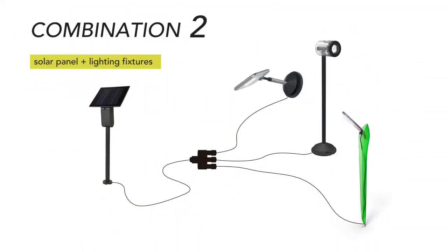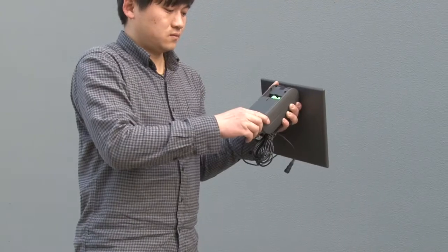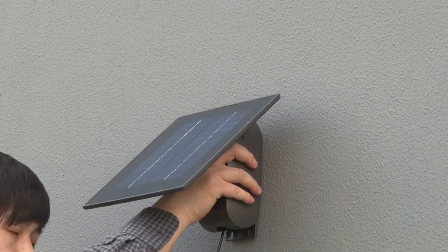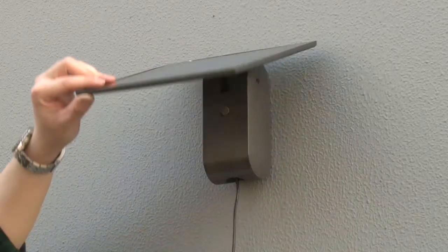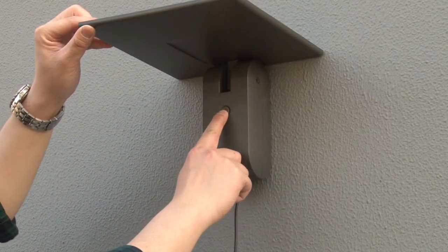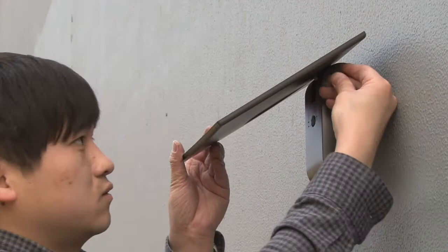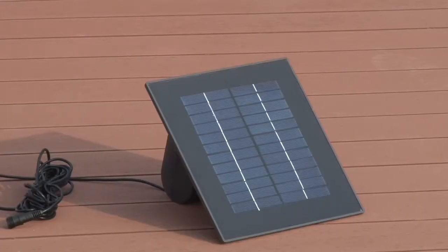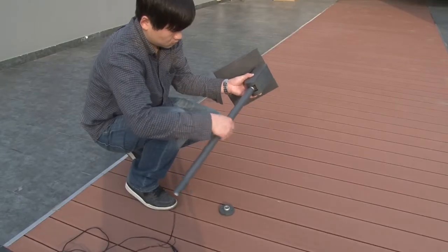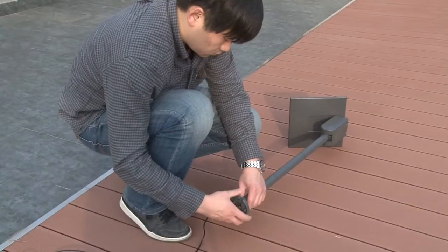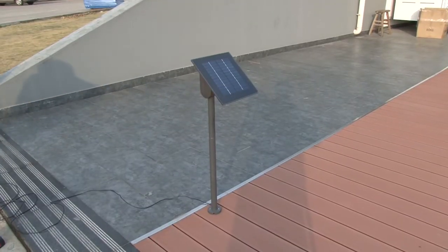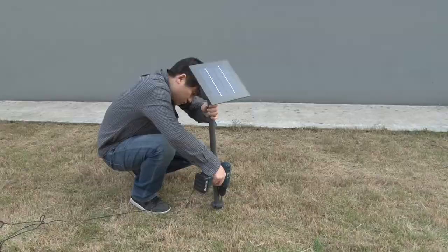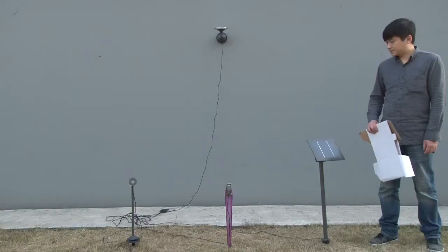Combination two: solar panel plus lighting fixtures. The solar panel can be placed wherever you want — generally installed on the wall. Turn on the switch, or directly put it on the table or plant it on the ground. The solar panel will automatically switch on the lights at night and turn them off in daylight.